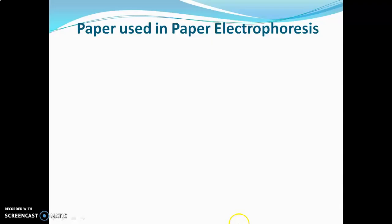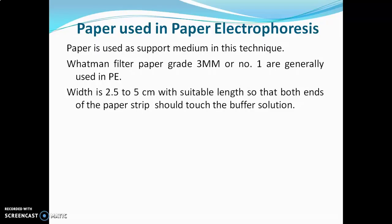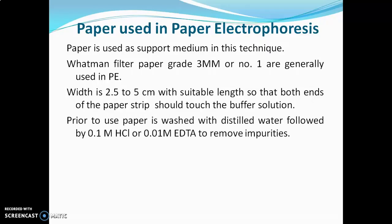Now we will see the practical aspects of paper electrophoresis, starting with the paper used. Paper is used as the support medium in this technique. Whatman filter paper grade 3MM or No. 1 are generally used. Width is 2.5 to 5 cm with suitable length so that both ends of the paper strip touch the buffer solution. Prior to use, the papers are washed with distilled water, followed by 0.1 molar HCl or 0.01 molar EDTA to remove impurities. After washing, the paper is dried and then used in electrophoresis.